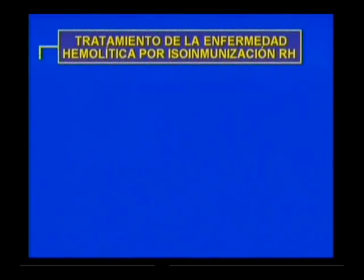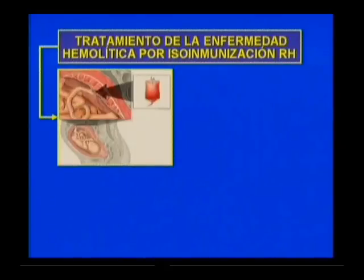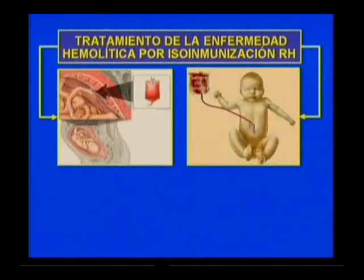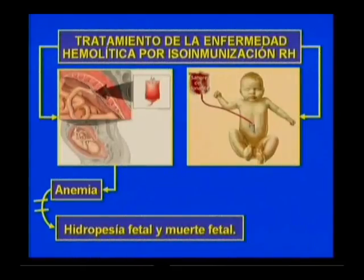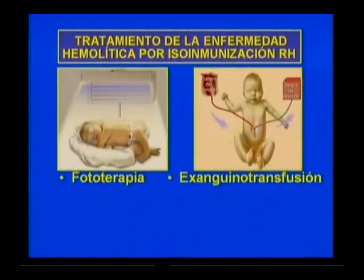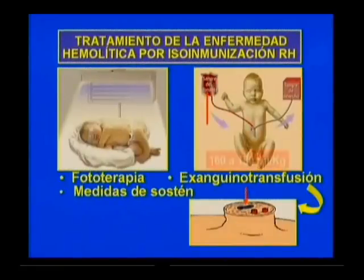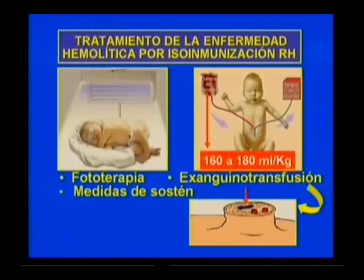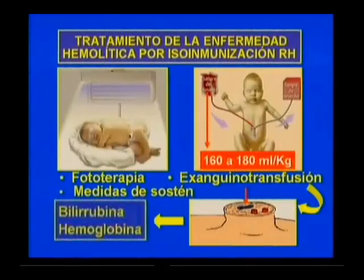El tratamiento puede realizarse tanto en la etapa fetal, si existe diagnóstico anteparto, como en el recién nacido. En el feto, está dirigido a mejorar la anemia para evitar la hidropeçía fetal y la posible muerte fetal. En el recién nacido, en la mayoría de los casos, está dirigido a evitar la encefalopatía bilirubínica, que no solo incrementa la mortalidad sino que puede dejar secuelas irreversibles. Se indican la fototerapia continua y la exanguineotransfusión, además de medidas de sostén. La exanguineotransfusión se realiza por la vena umbilical, recambiando 160 a 180 mL/kg con sangre del grupo del niño y RH negativo, realizando evolutivamente bilirrubina y hemoglobina.